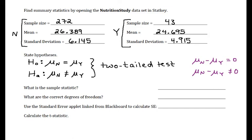Okay, so our sample statistic is x n bar minus x y bar. I'm staying in the same order that I subtracted my parameters here. And that is going to be 26.389 minus 24.695, which turns out to be 1.694.